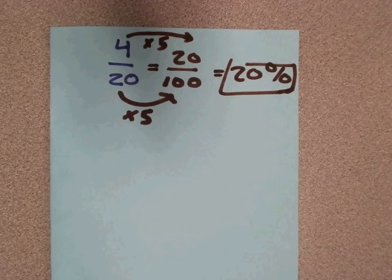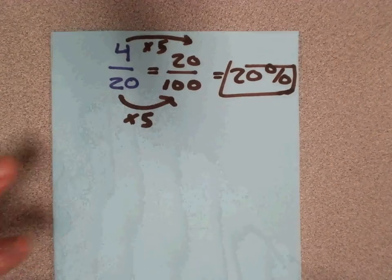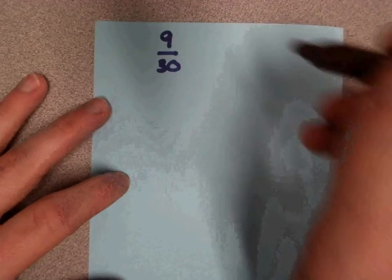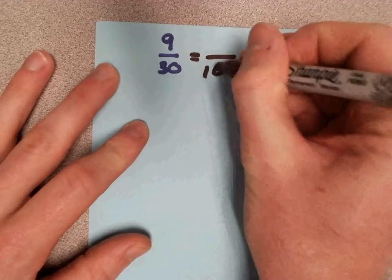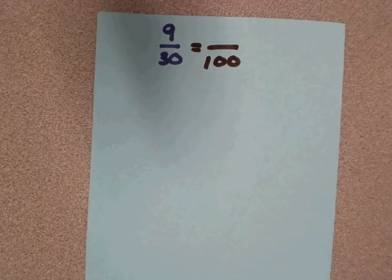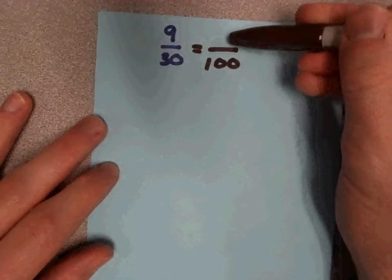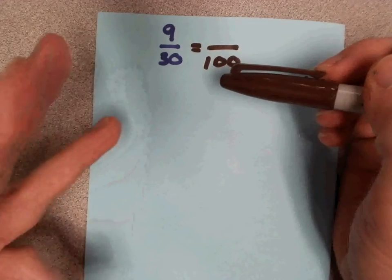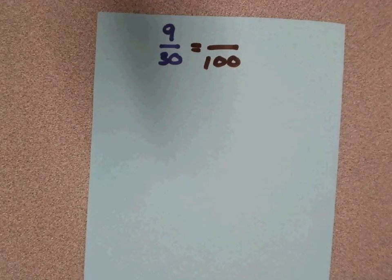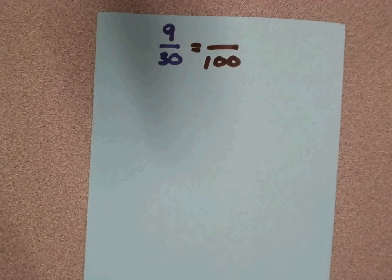Now sometimes, we're not going to be able to turn this bottom number into 100. So let's look at 9 over 30. Again, I would like to try to turn the bottom number into 100 because the top number would automatically be my percent. But 30 can't evenly go into 100. 30, 60, 90, 120, we didn't hit 100. So I'm going to have to reduce.